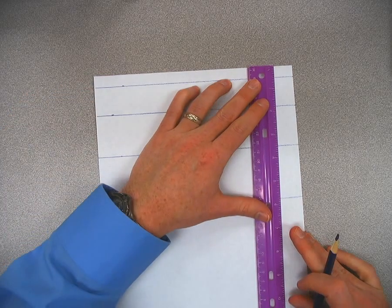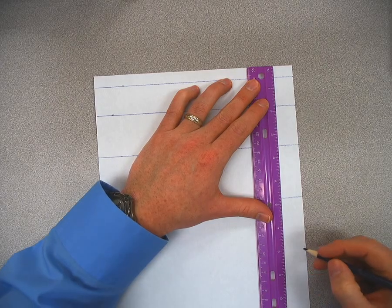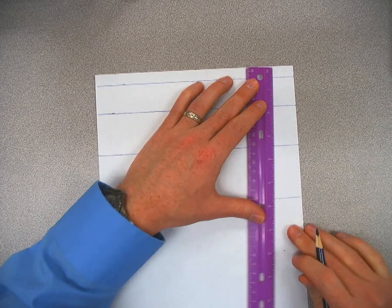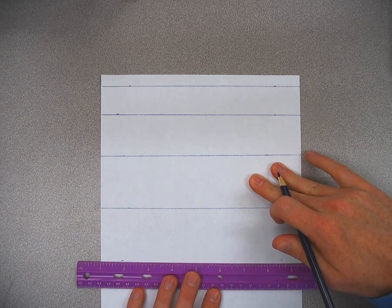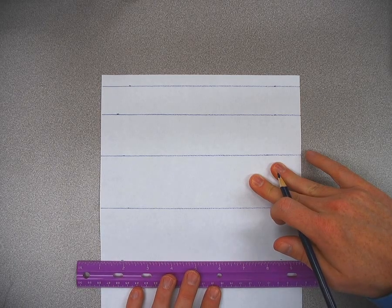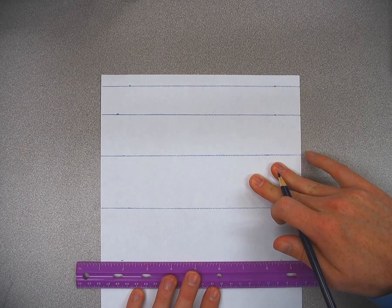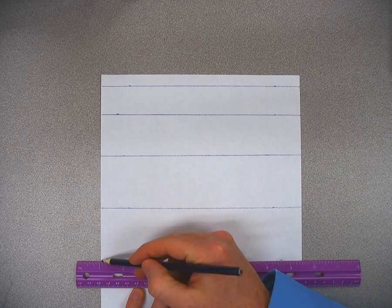Now you'll notice that all of the sections of this foldable get bigger as they go down. And that's the same way our levels of organization. We start at the top real small with the cell and work down to the bottom with the organism.